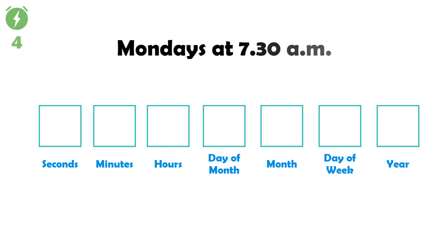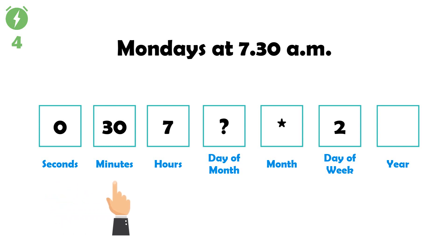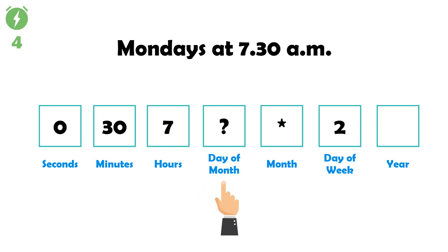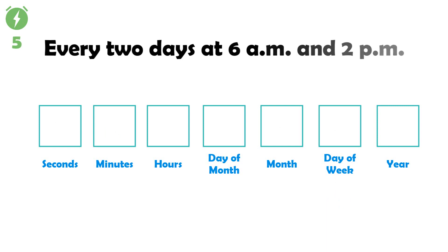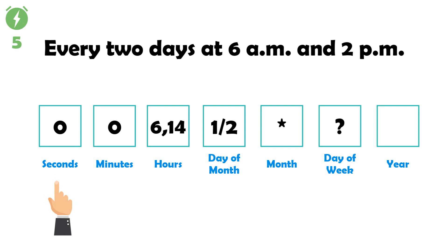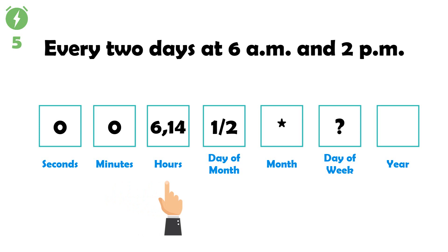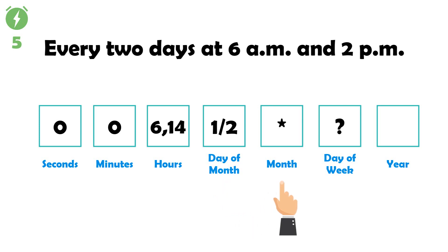Fourth example: Mondays at 7:30 a.m. — '0 30 7 ? * 2'. Zero in seconds, thirty in minutes, seven in hours, question mark in day of month, star in month, and two in day of week means Monday. Fifth example: every two days at 6 a.m. and 2 p.m. — '0 0 6,14 1/2 * ?'. Six comma fourteen in hours means 6 a.m. and 2 p.m., and '1/2' in day of month means every two days starting from the first day of the month.